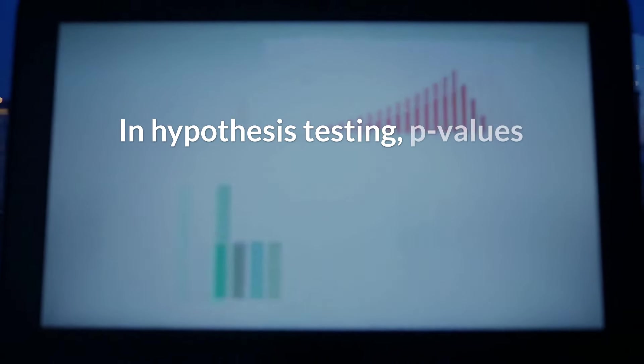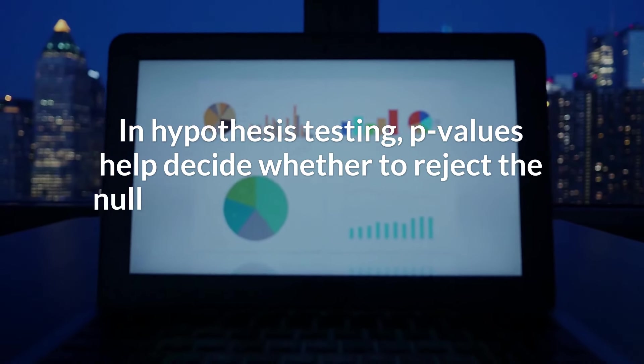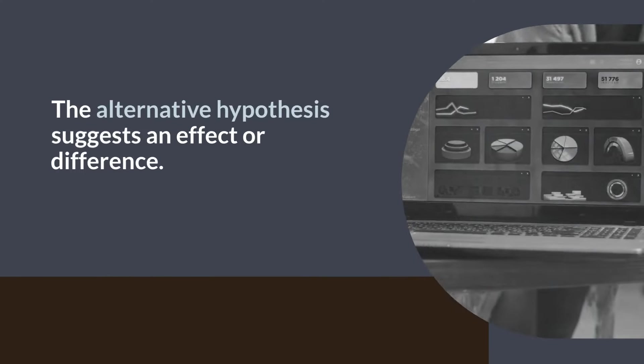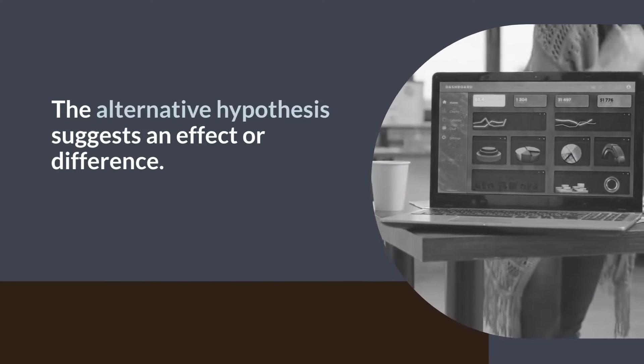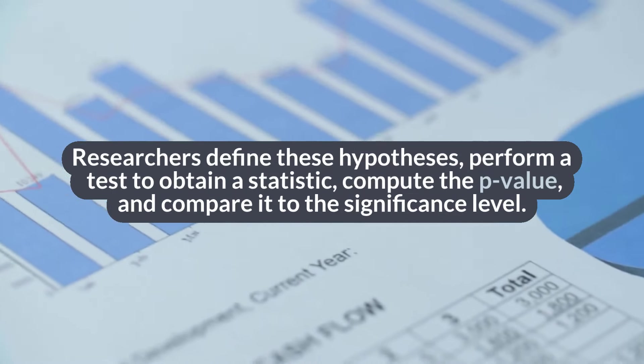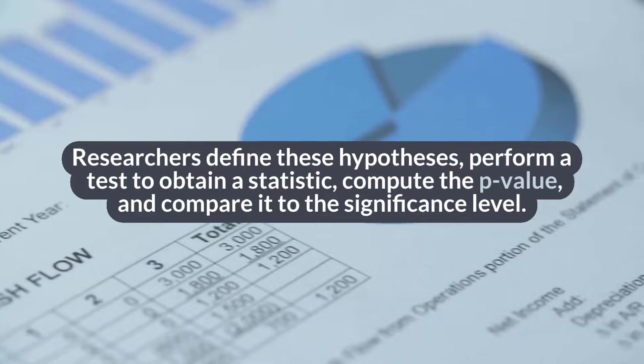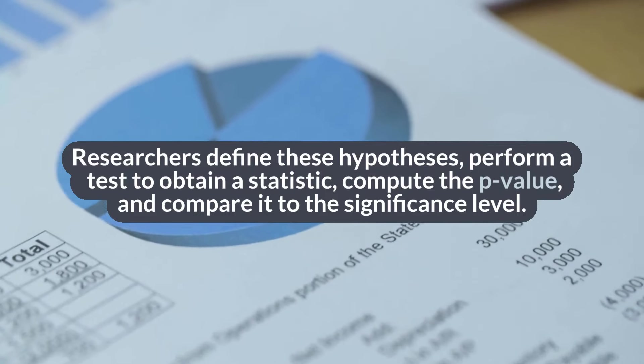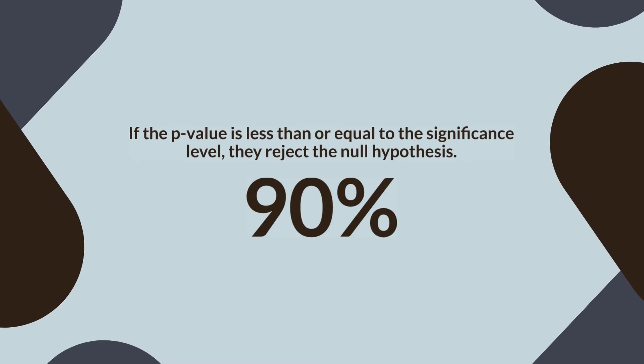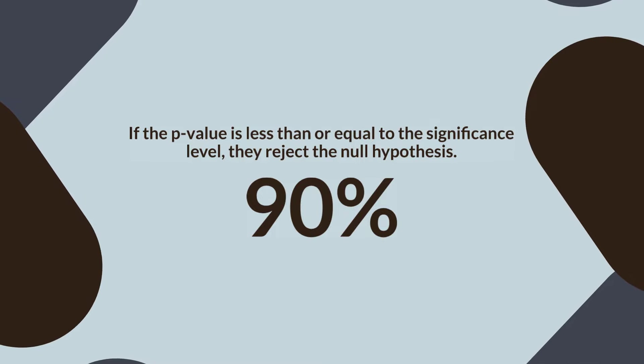In hypothesis testing, p-values help decide whether to reject the null hypothesis, which assumes no effect or difference. The alternative hypothesis suggests an effect or difference. Researchers define these hypotheses, perform a test to obtain a statistic, compute the p-value, and compare it to the significance level. If the p-value is less than or equal to the significance level, they reject the null hypothesis.